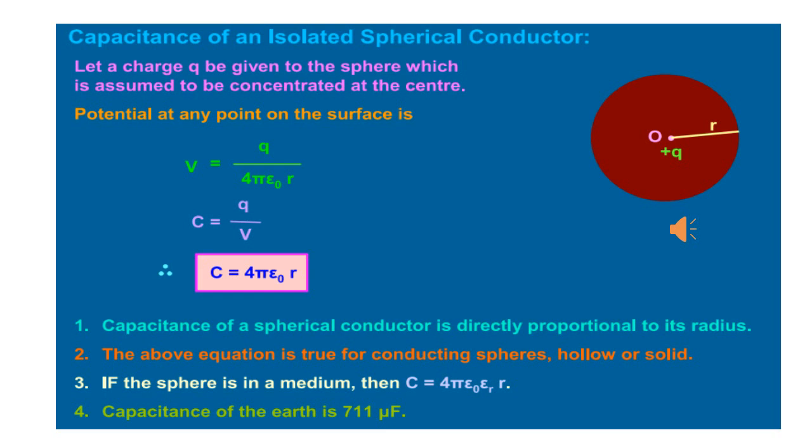Always remember the above equation is true for conducting spheres, hollow or solid. If the sphere is in a medium, then C will be 4 pi epsilon 0 epsilon R into R.